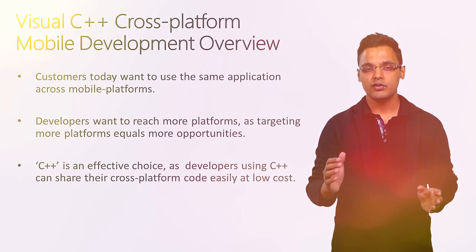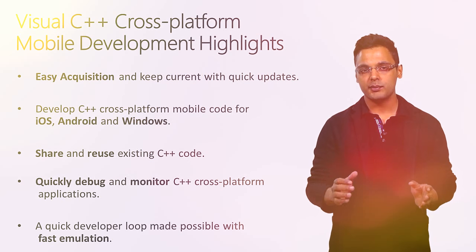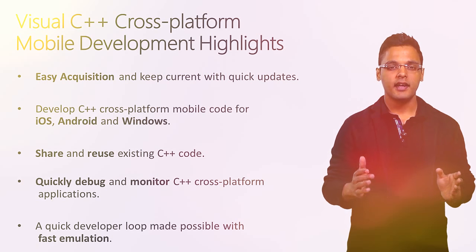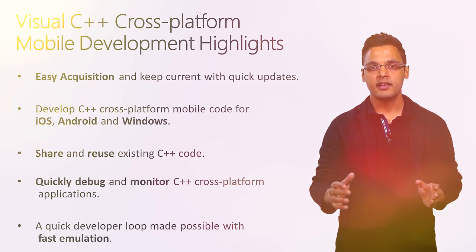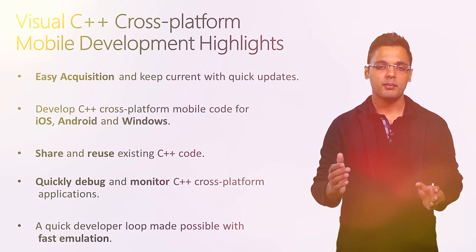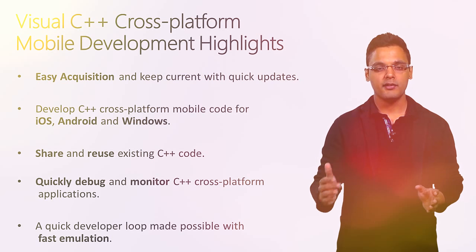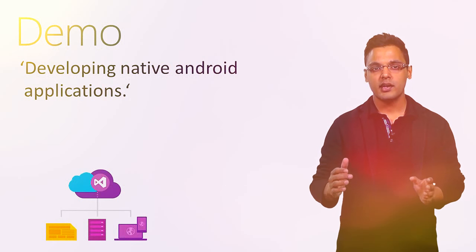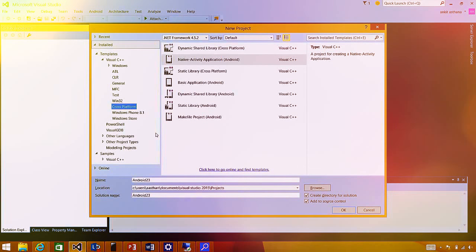Starting with Visual Studio 2015, Visual C++ will provide a great experience for cross-platform development. Developers will be able to acquire all their cross-platform mobile development software easily and stay current with frequent updates. Visual C++ 2015 will also allow developers to build cross-platform mobile applications leveraging C++ for all major mobile platforms and share and reuse cross-platform code easily, with a faster debugging experience. In the File > New Project menu, developers will now see a cross-platform node light up under Visual C++, with a wide range of templates.